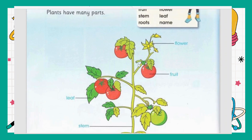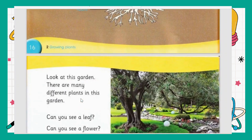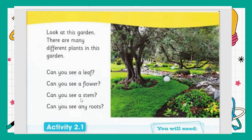So the parts of the plant we have learned are: flower, fruit, leaf, stem, and roots. Look at this garden — there are many different plants. You can see yellow flowers, red flowers, white flowers, and also some fruit. Can you see the leaf over there? Can you see a flower? Yes, this is the yellow flower. Can you see a stem?